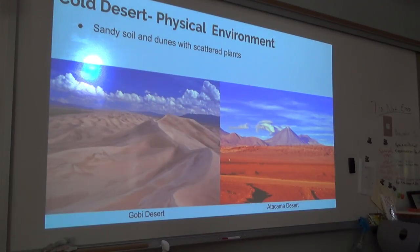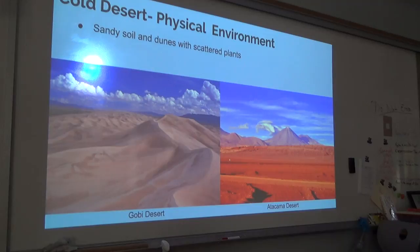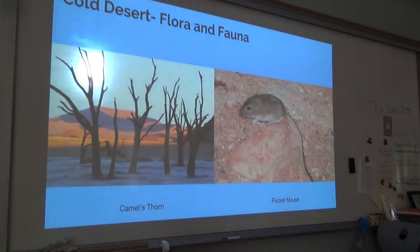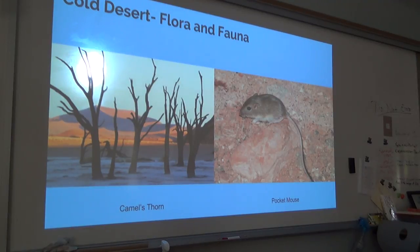For example, the Great Basin Desert in the northwestern United States can have a fair amount of snow in winter but none in spring. Cold deserts generally have scattered low-lying shrubbery, such as sagebrush, that can survive on small amounts of water. They can sometimes be home to larger trees, such as camel's thorn found in the Gobi Desert.